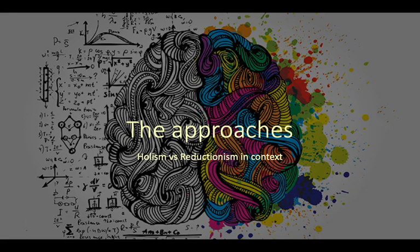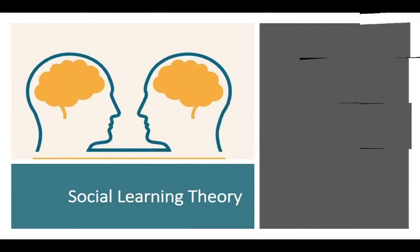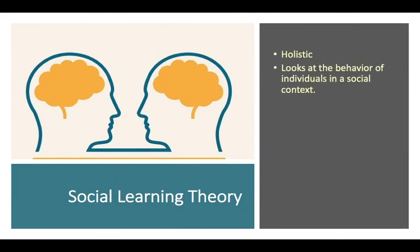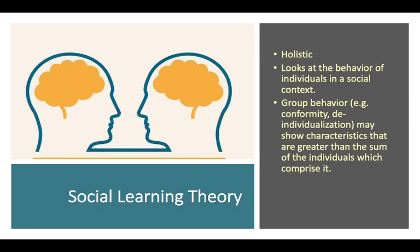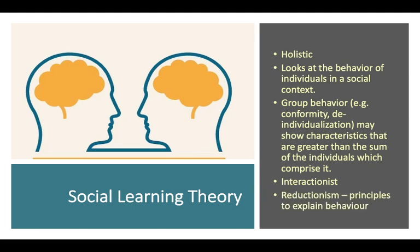Looking at these ideas within the context of different psychological approaches: social learning theory is quite holistic, because it looks at the behavior of individuals in a social context — group behavior, conformity, or de-individualization — and may show characteristics that are greater than the sum of the individuals. Like the Stanford Prison Experiment, you need to look at what's going on within the group, because when you focus solely on an individual and ignore the circumstances, you won't understand the behavior. Social learning theory is interactionist — it has a bit of both — so it's not entirely holistic; there are some reductionist parts, which is why it's interactionist, meaning a bit of both, similar to the nature versus nurture debate.